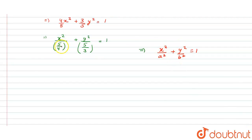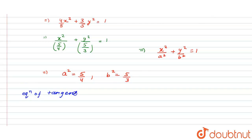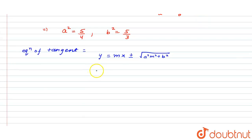Comparing with the general equation, we get a² = 5/4 and b² = 5/3. We know that the equation of the tangent when slope is given is y = mx ± √(a²m² + b²). Substituting the values: y = √3·x ± √(5/4 · 3 + 5/3).